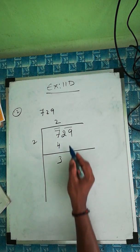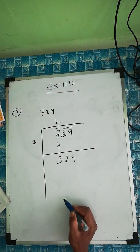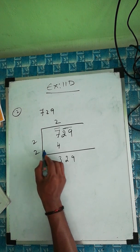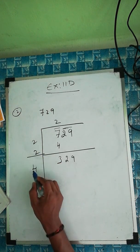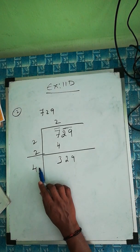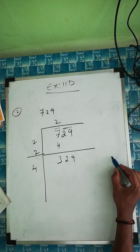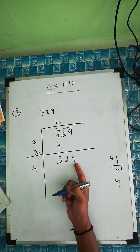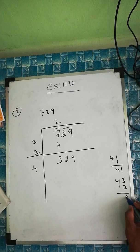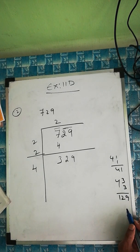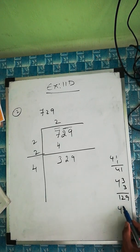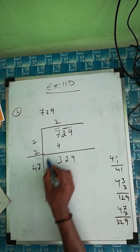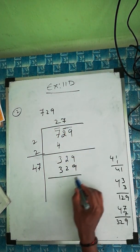Subtract: 7 minus 4 equals 3. Bring down both digits: 29. Now write the quotient digit 2 again below and add: 2 plus 2 equals 4. We need to find what number, when placed as the next digit of the divisor and multiplied, gives 329. Try 41×1=41, that's not right. Try 47×7=329 — yes, that works! So we write 7 in the quotient and 47 as the divisor, giving 329.